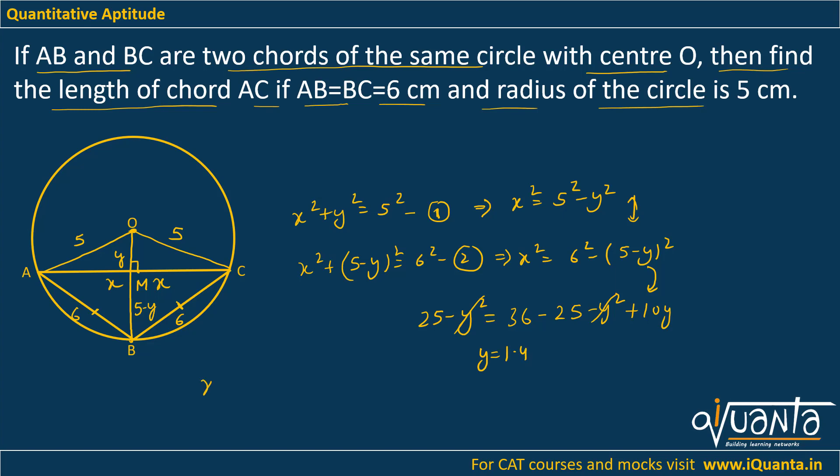So now I can easily calculate the value of X. X will be equal to square root of 5 square minus 25 minus 1.4 square, which will give me 4.8. So length of AC will be 2X. 2X will be 2 into 4.8, that means 9.6 centimeters. This will be the correct answer to this question.